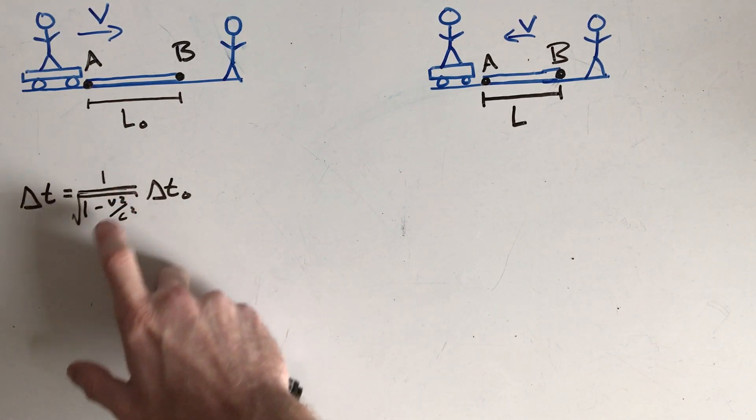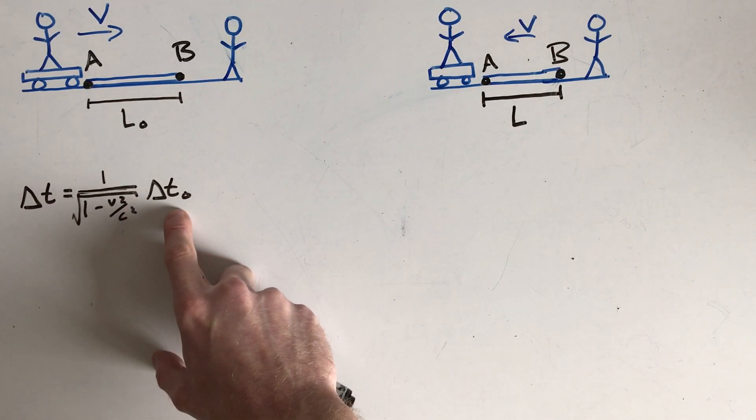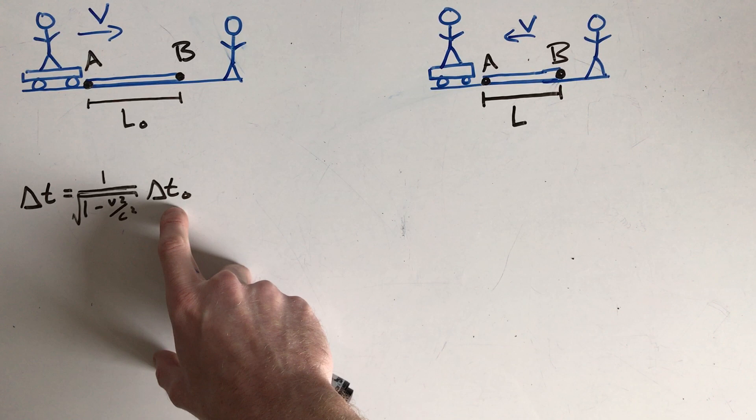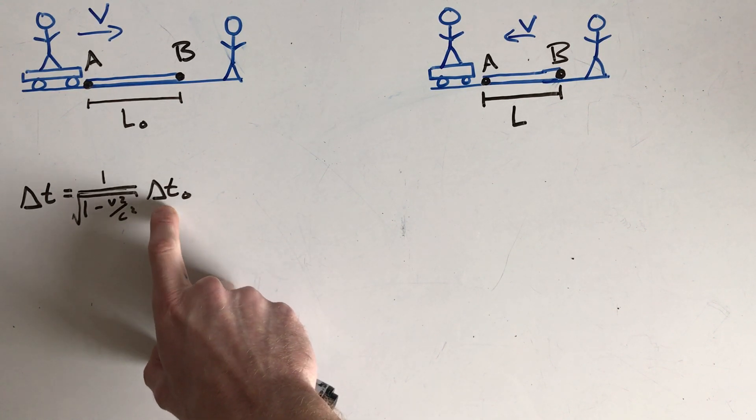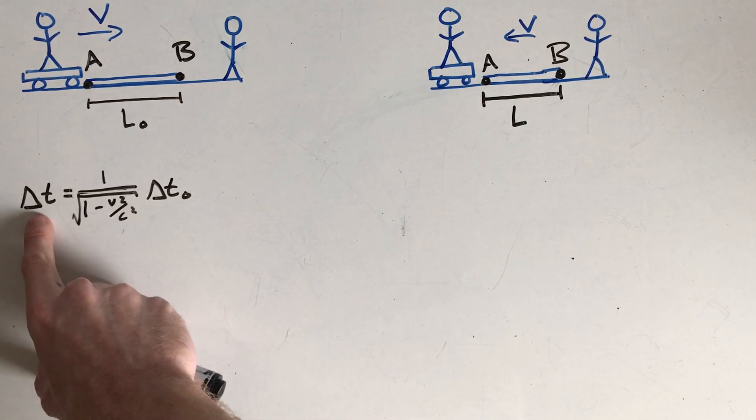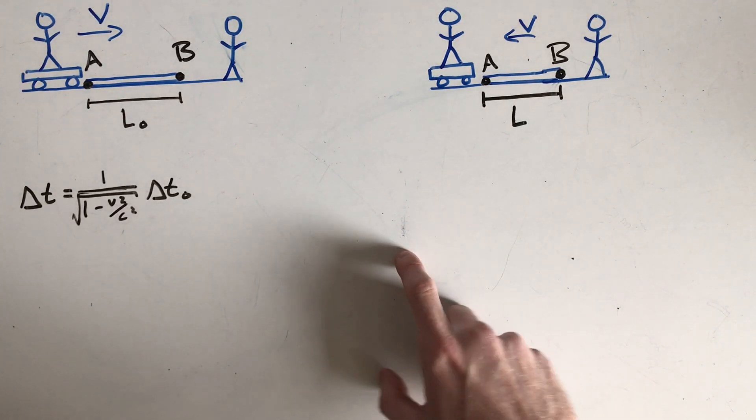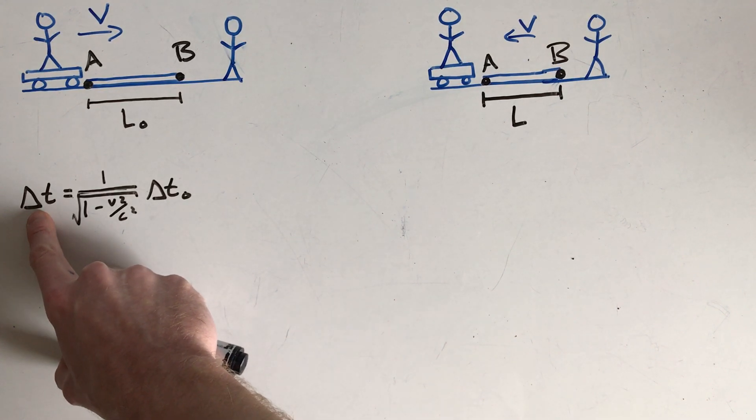All right, so what this tells you is that if you have the time measured by an observer at rest with respect to some two events, then someone who measures those two events as moving through space will actually measure more time. All right, so this can be a simple way to interpret this: moving clocks will tick slower.